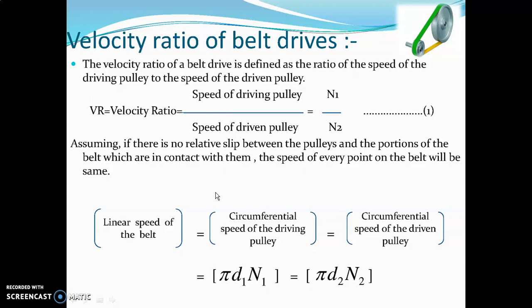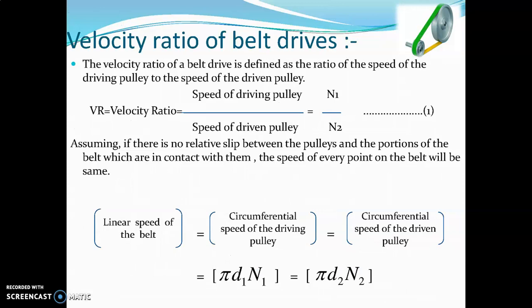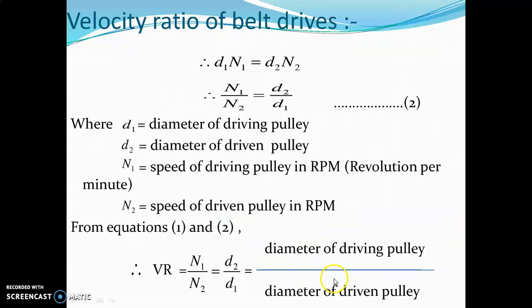The linear speed of the belt is equal to the circumferential speed of the driving pulley and the driven pulley. The driving pulley is πd₁n₁ and the driven pulley is πd₂n₂. Canceling π, we get d₁n₁ is equal to d₂n₂.